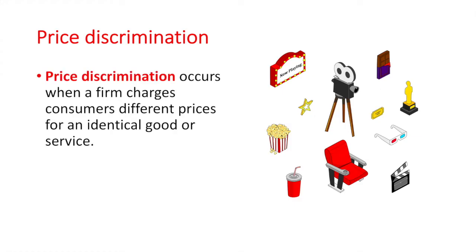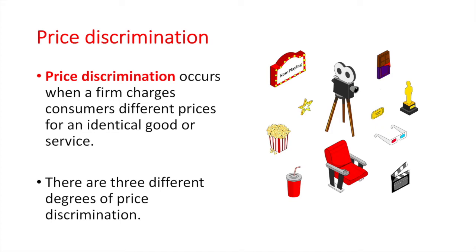Price discrimination occurs when a firm charges consumers different prices for an identical good or service. You've probably experienced this at the cinema as a student. In many places, students are charged less for tickets than adults. Now let's try and get a better understanding as to why firms price discriminate.